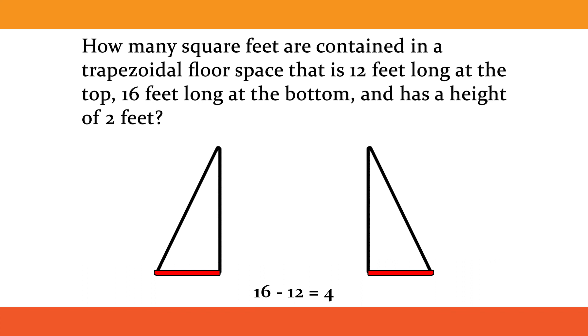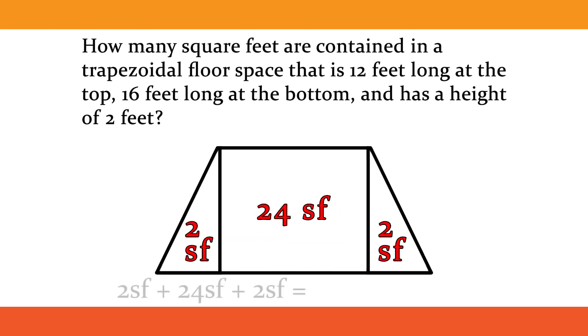Because there are two equivalent triangles, we know each one is 2 feet wide. 2 feet times 2 feet divided by 2 equals 2 square feet per triangle. 2 square feet plus 24 square feet plus 2 square feet equals 28 square feet.